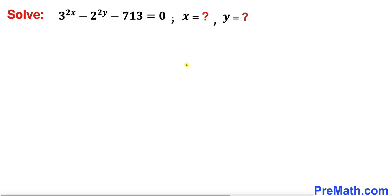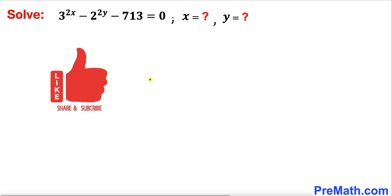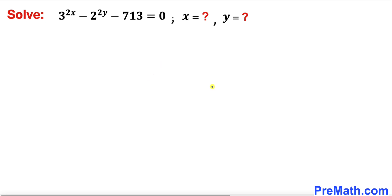Welcome to Pre-Math. In this video we are going to solve the given exponential equation 3^(2x) minus 2^(2y) minus 713 equals 0, and we are going to find the value of x and y. Please don't forget to give a thumbs up and subscribe. Let's go ahead and get started with the solution.